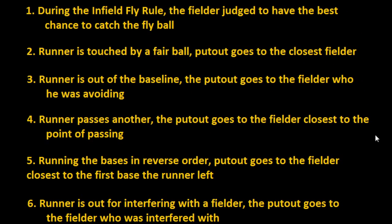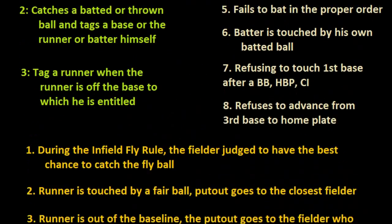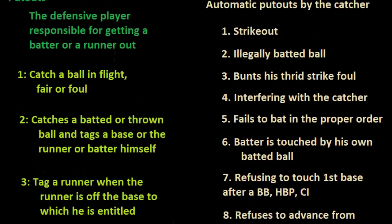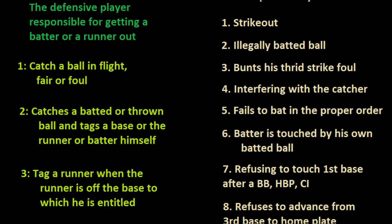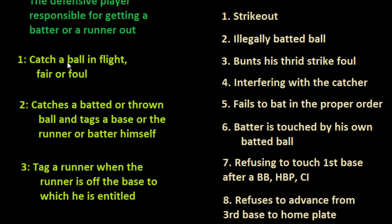So the first baseman would receive the put out and the fielder would receive an assist. These are the seven different ways a fielder could receive credit for a put out. We also have the eight ways the catcher could receive an automatic put out, and then the three main categories where the majority of put outs will fall.